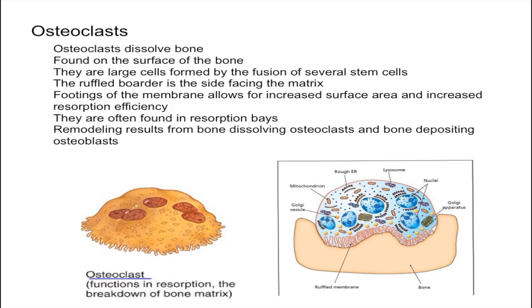In this video I'm going to talk about what osteoclasts are. Osteoclasts are bone dissolving cells that are found on the surface of the bone. These osteoclasts are a little different than the other bone cells because they develop from bone marrow stem cells that can also give rise to blood cells. These cells are pretty large and they're formed from the fusion of a bunch of stem cells, and as a result they have many nuclei.